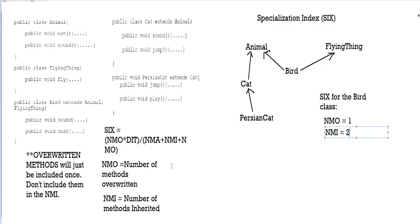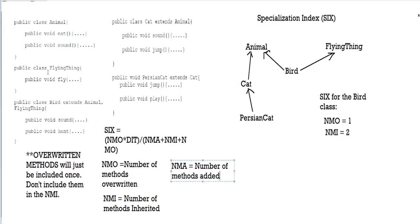Next, we're going to take a look at NMA — the number of methods which are added. Going back to the bird class, sound is already accounted for as overwritten. But there is another method here called hunt. The hunt method has not been inherited from the parent classes — only eat and fly have been inherited. Since hunt is not overwritten and not inherited, it has been added to the bird class. So the number of methods added to the bird class is equal to 1.